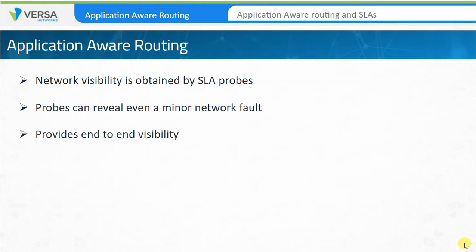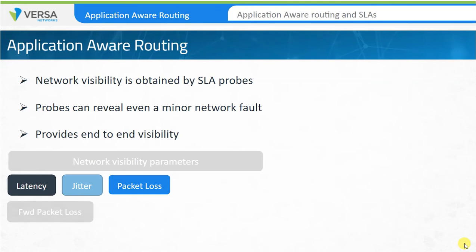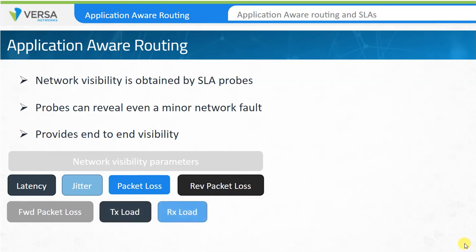Network nodes can be made aware not only of latency, jitter, or packet loss on a specific circuit, but also the direction of packet loss. Information such as forward packet loss or reverse packet loss, transmit load, received load on any WAN link, and many more properties of the link can be measured. Advanced metrics such as MOS measurement can reveal which WAN circuit is performing better for real-time voice or video streams.